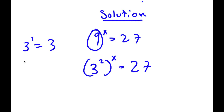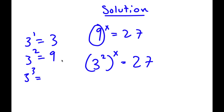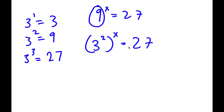Now, 3 to the power of 1 is 3, 3 to the power of 2 is 9, and 3 to the power of 3 is going to equal 9 times 3, because as the exponent goes up, the result is multiplied by 3. That's how powers of 3 work. So 3 to the power of 3 equals 9 times 3, which is 27. So I can rewrite 27 as 3 to the power of 3.